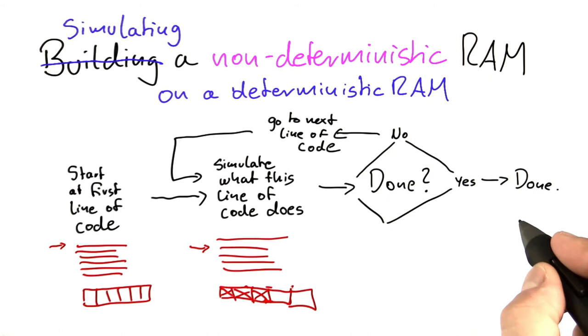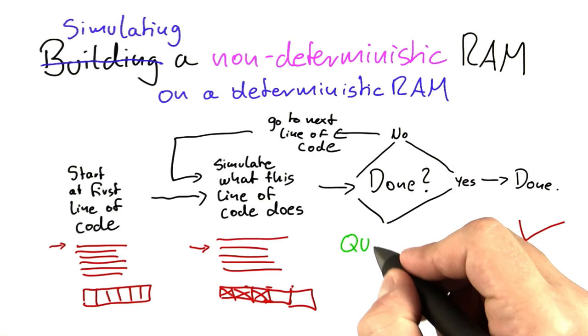So we check again if we're done, we go to the next line of code, and so on, until we're done. And the reason why this simulation works, and it actually works rather efficiently, I would say, is that determinism means that each line of code specifies exactly what's going to happen next.